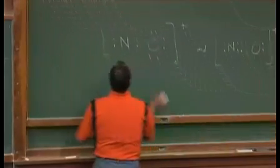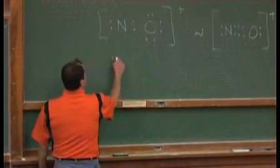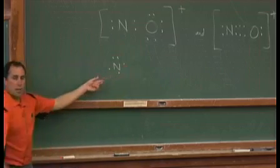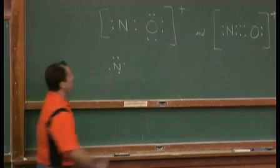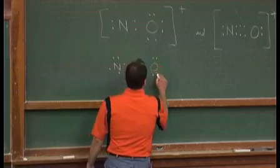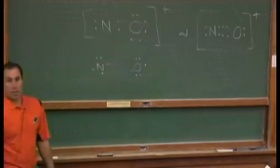See nitrogen is in group five, it has five valence electrons, so I'm going to put an N with five dots. Oxygen is in group six, it has six valence electrons, six dots.